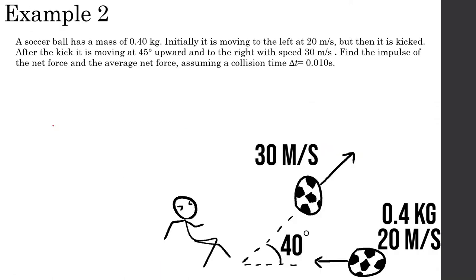Example number two: a soccer ball has a mass of 0.4 kilograms and is initially moving to the left at 20 meters per second. Then it is kicked. After the kick, it is moving at a 45-degree angle upward to the right with a speed of 30 meters per second. Find the impulse of the net force and the average net force, assuming a collision time of 0.01 seconds.